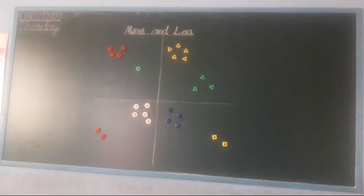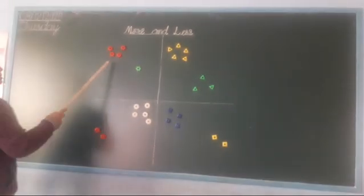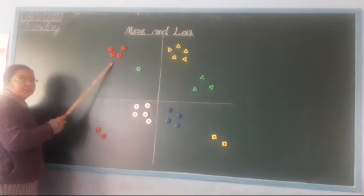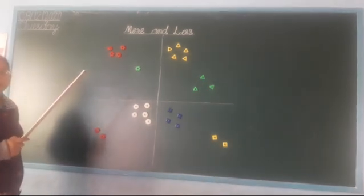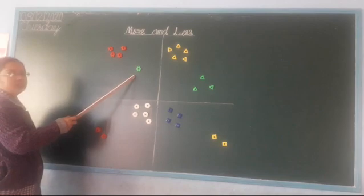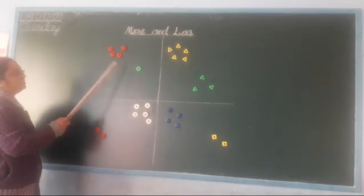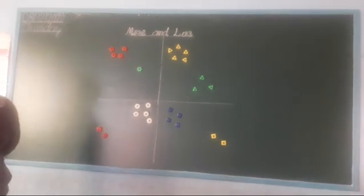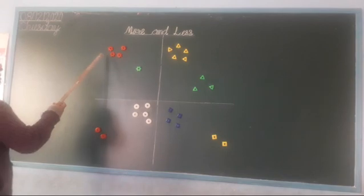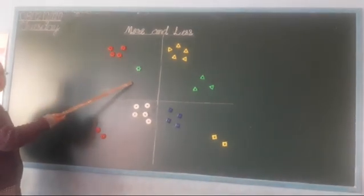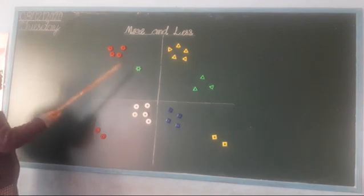Which shape is this children? It is a flower. And which color is this? Red. Red flowers — and this one is a green flower. Which one is more and which one is less, children? Give me the answer. Which flower is more and which flower is less? These flowers are more and this flower is less. More, less.